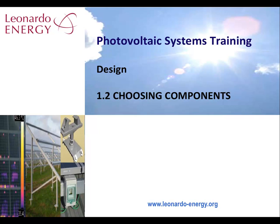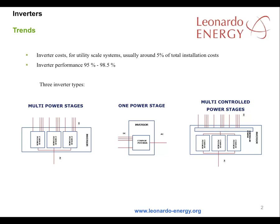This module focuses on the criteria for component selection for PV installations. The inverter can be considered as the heart of a solar facility. For a utility scale installation, the inverter cost is usually around 5% of the cost of the complete installation.